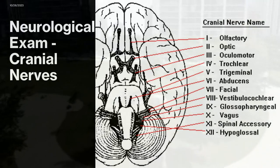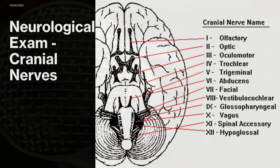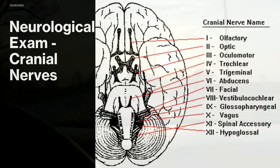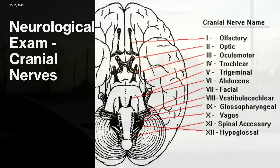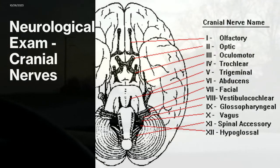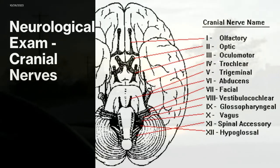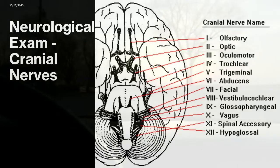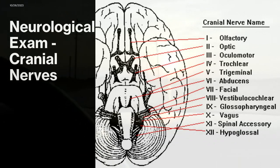The eighth cranial nerve has two parts: the cochlear part, related to hearing, and the vestibular part. The best context for understanding this nerve is in the context of dizziness, and the presence of dizziness can give a sense of what's going on with the eighth cranial nerve.